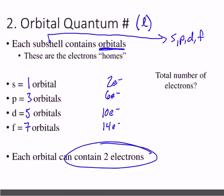We're getting more and more specific: the electron cloud is like the country, the principal energy level is like the state, the sub-level letter is kind of like the county, and the orbitals are kind of like the city. We'll have a visual to help with that in a few minutes.